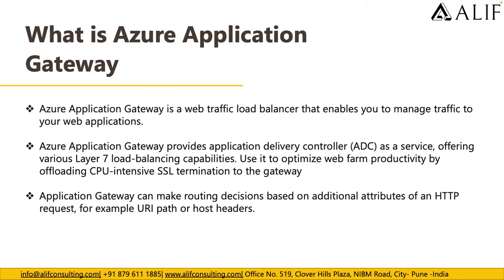It's used to optimize web farm productivity by offloading the CPU-intensive SSL termination to the gateway. Application Gateway can make routing decisions based on additional attributes of an HTTP request, for example URL path or the host header.